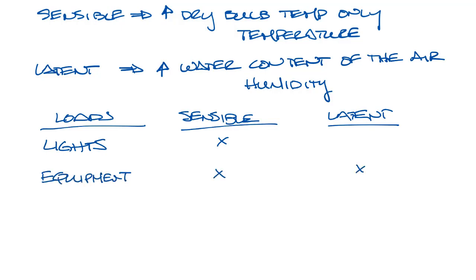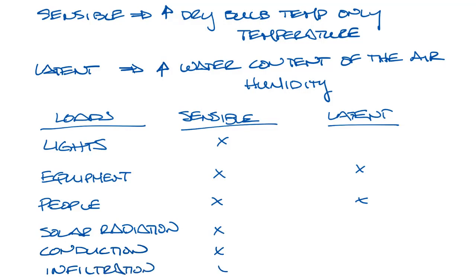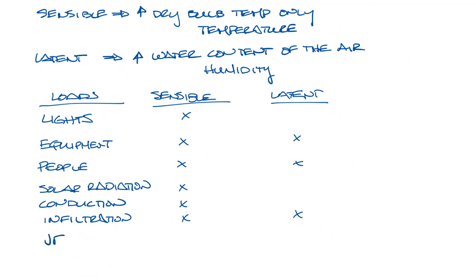Equipment in the building could be sensible or latent, like coffee makers could add some humidity to the building. People are sensible and latent. Solar radiation is sensible. Conduction is sensible. Infiltration from outside can be sensible or latent. Ventilation is sensible or latent. And then your HVAC equipment is usually sensible.